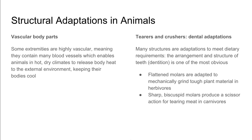Some organisms may have vascular body parts, including extremities with lots of blood vessels, which enables them to release body heat to the external environment as a way of keeping cool. We also see dental adaptations, which are structural features enabling an organism to meet their dietary requirements. Flattened molars are used for grinding plant material in herbivores, while sharp bicuspid molars produce a scissor action for tearing meat in carnivores.